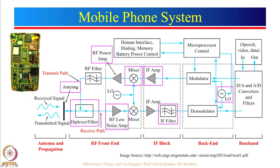Let us also look at the transmitter chain. There is a modulator, then an IF amplifier, there is a mixer which does up-conversion. Modulation is done at a lower frequency and then conversion is done to the higher frequency. This is the RF power amplifier. Typically for a mobile phone this amplifier may give about roughly 1 watt of output power, and in some systems it may be even 2 watts. Then it goes through the filter and antenna.